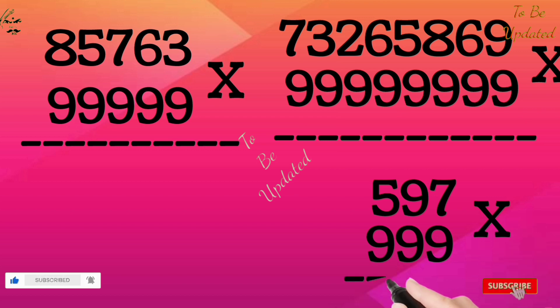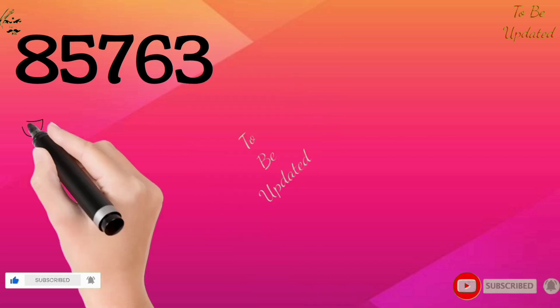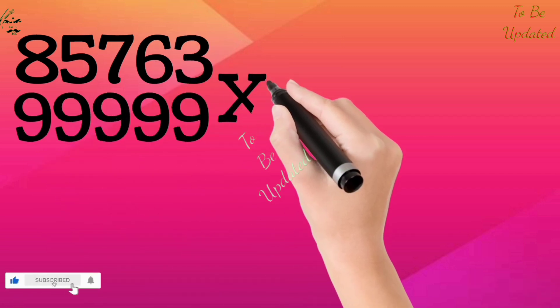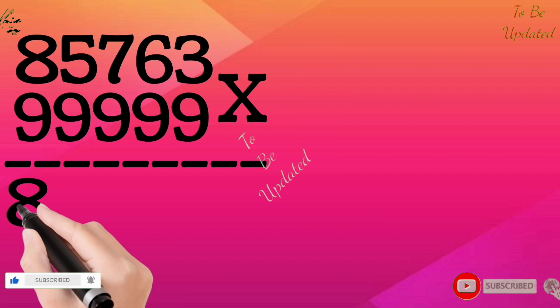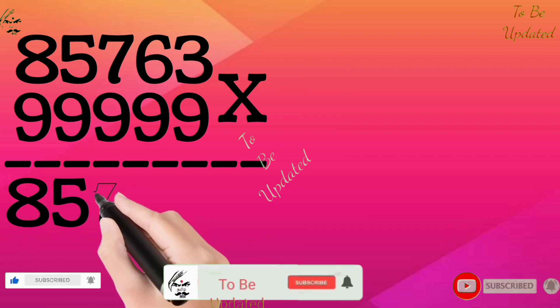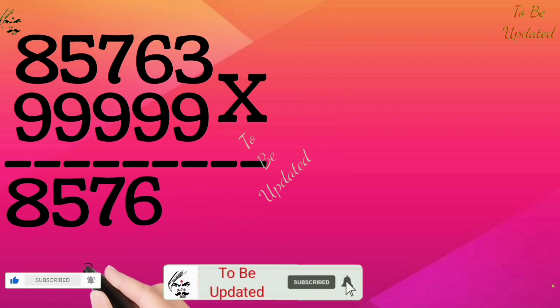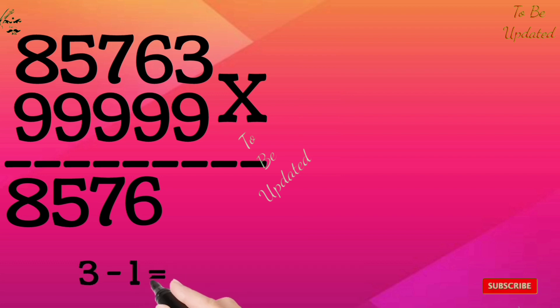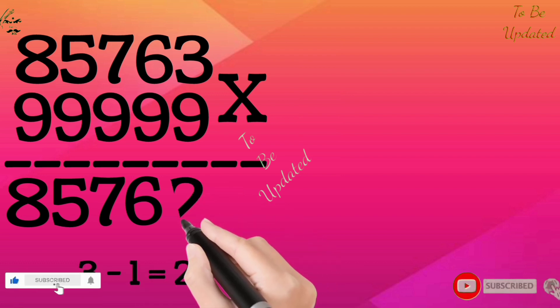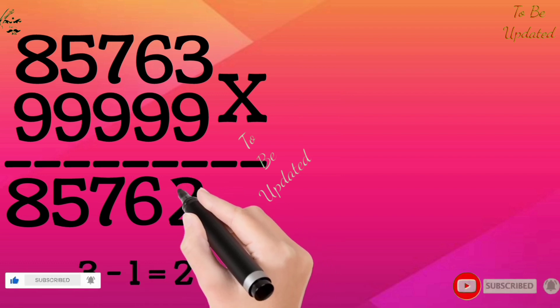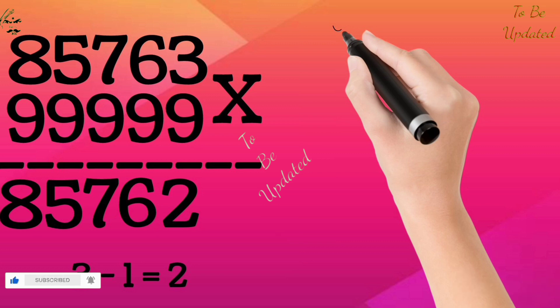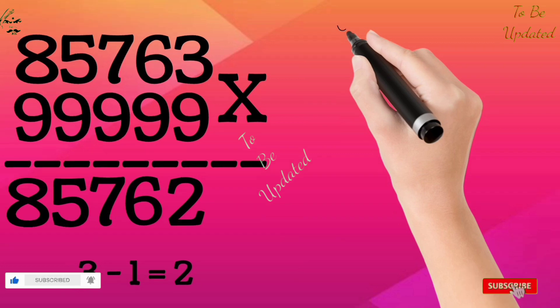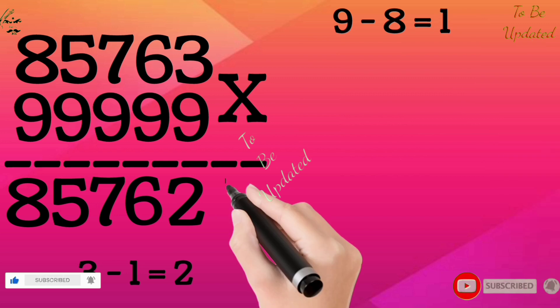Now let us see how to solve these sums. 85763 multiplied with 99999. First write the number as it is, like 85876. Before writing the last number, subtract 1 from the last number. So 3 minus 1, we get 2. Put that 2. Then you are going to subtract each number by 9. See carefully: 9 minus 8 we get 1.